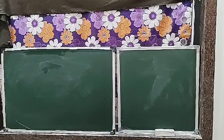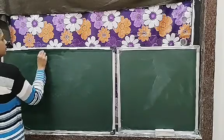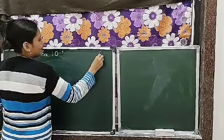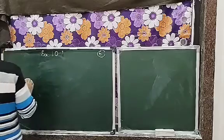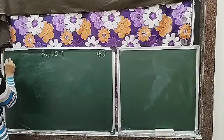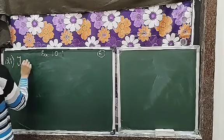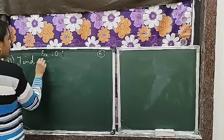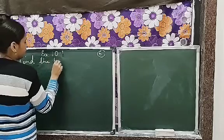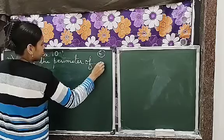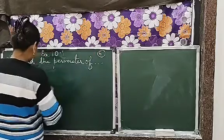So children, today we have to start with exercise 10.1. Let's do that. Question number 1. Find the perimeter of the following figures. So we are doing it in copy.